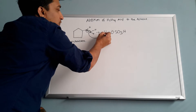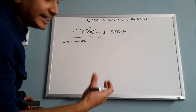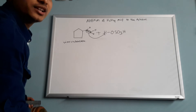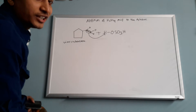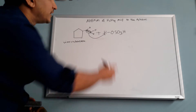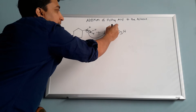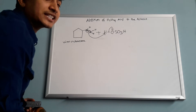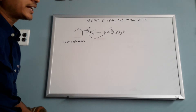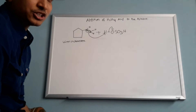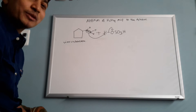So the pi bond is going to be attacked toward this hydrogen. When the pi bond grabs this hydrogen, this bond breaks and gives the lone pair, and oxygen accepts the lone pair — and when oxygen accepts the lone pair, it becomes negatively charged.